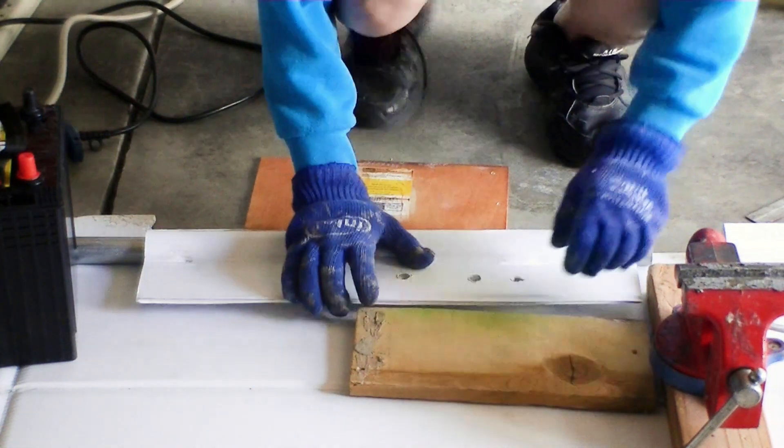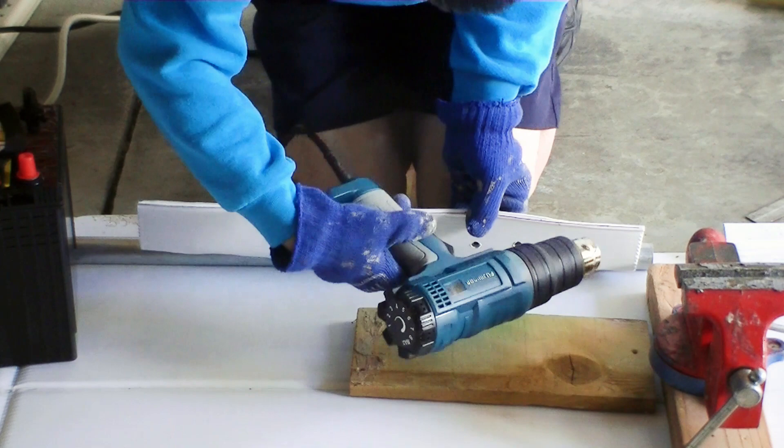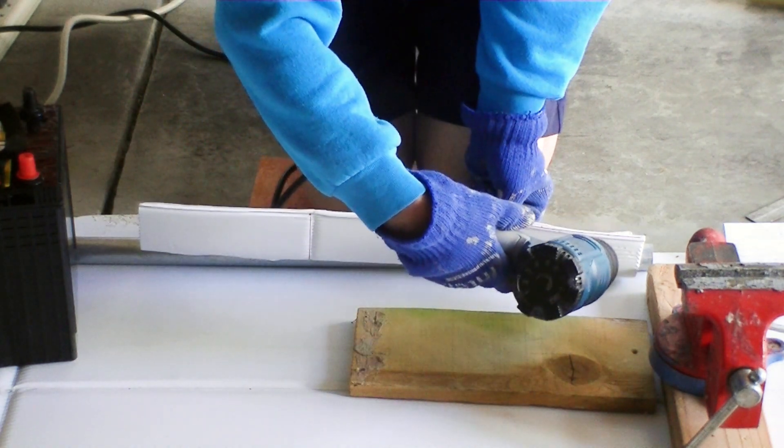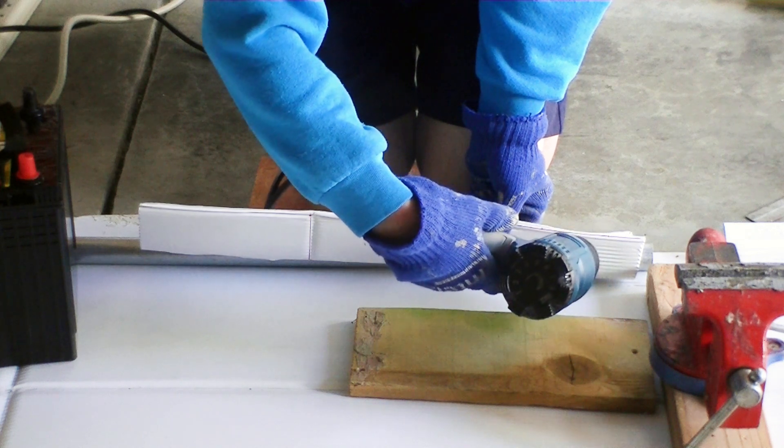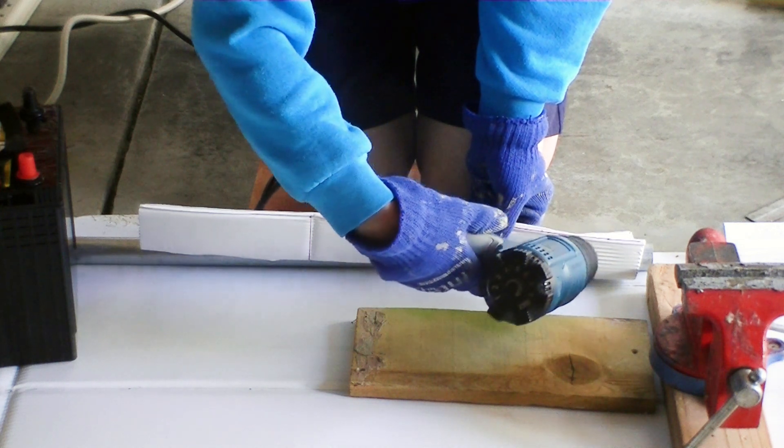Because the length of the slot is about 2 feet long, the heat gun cannot generate enough heat to complete the fusion process in one step. Therefore, I have to do that in two separate steps.